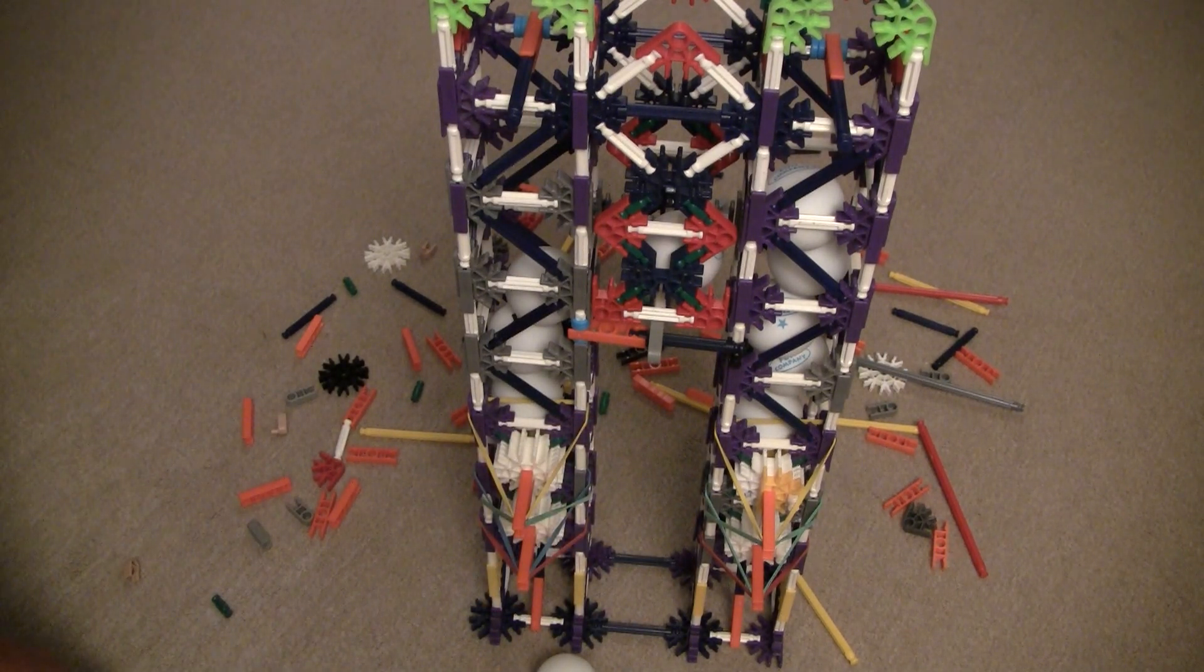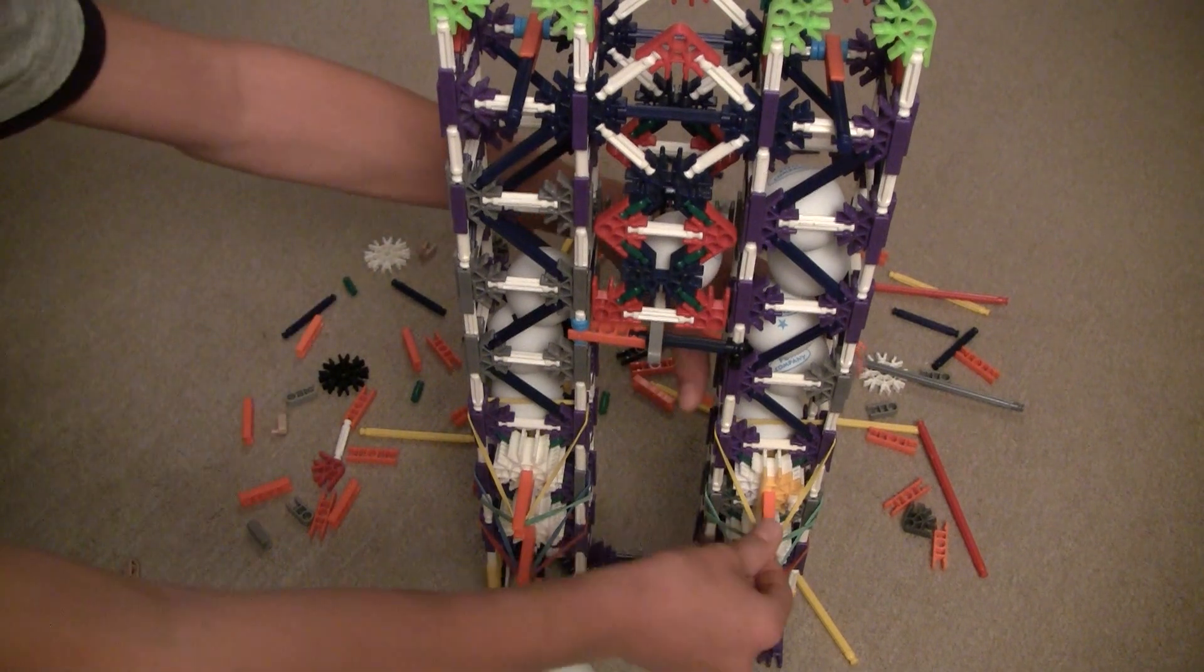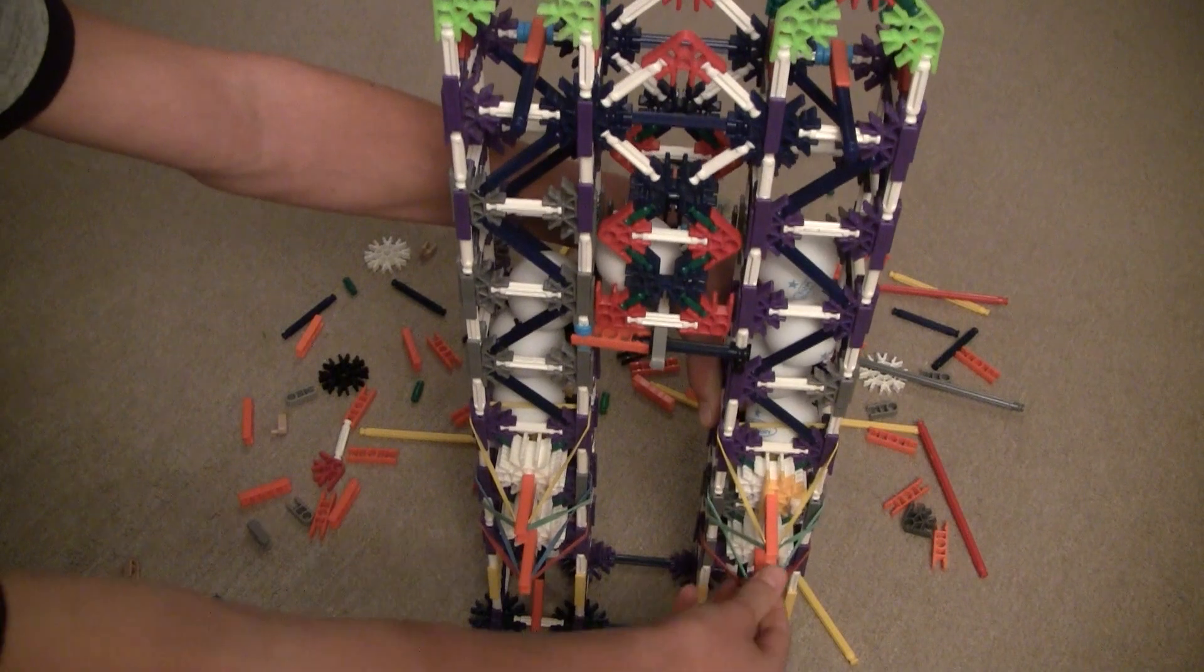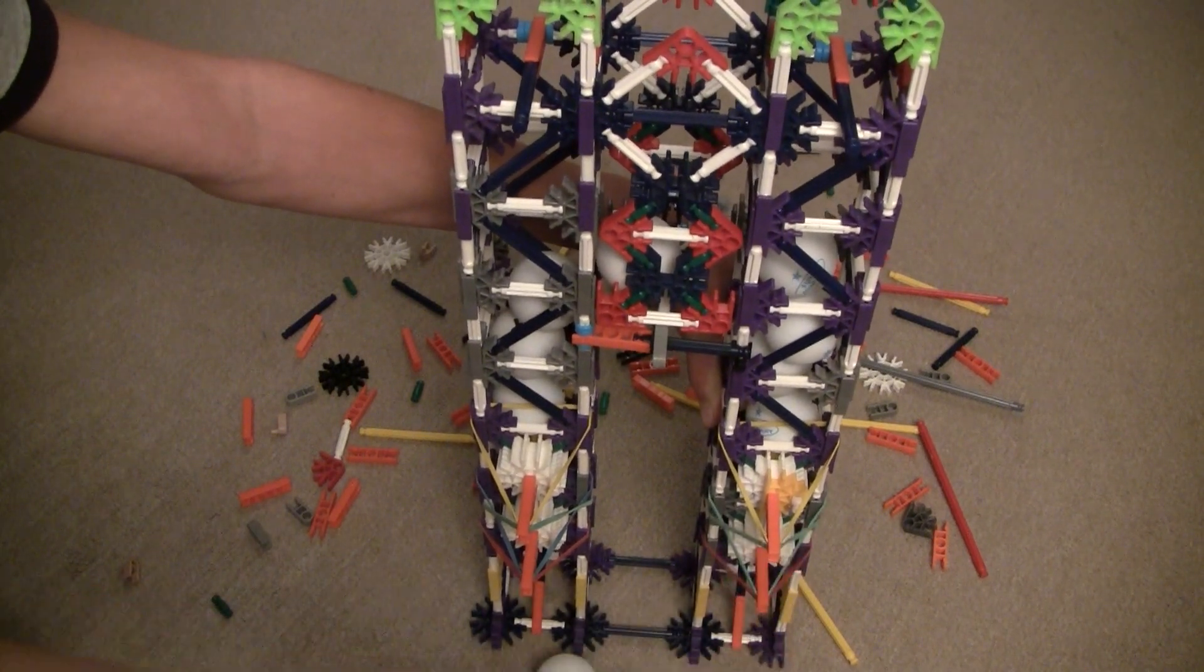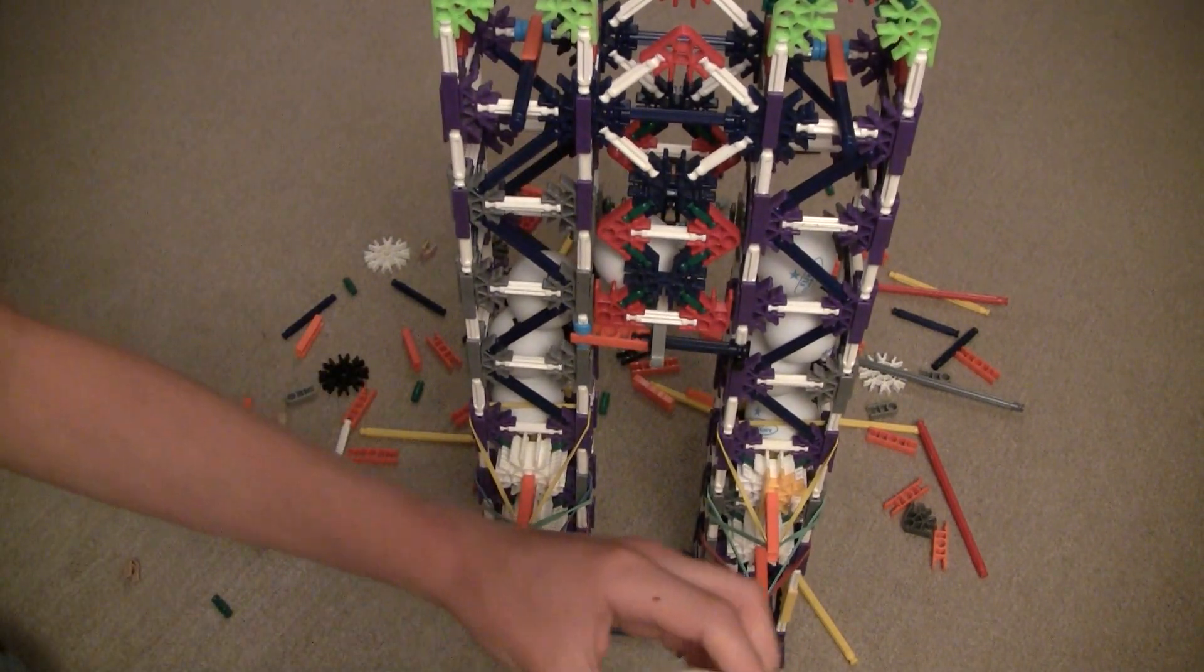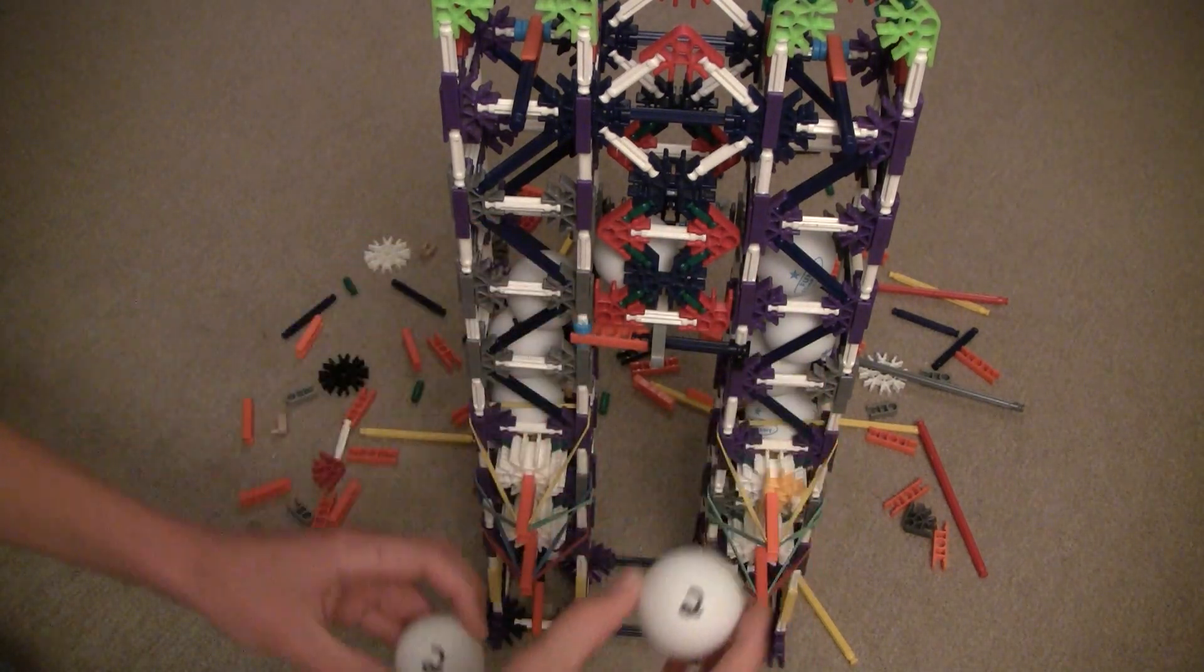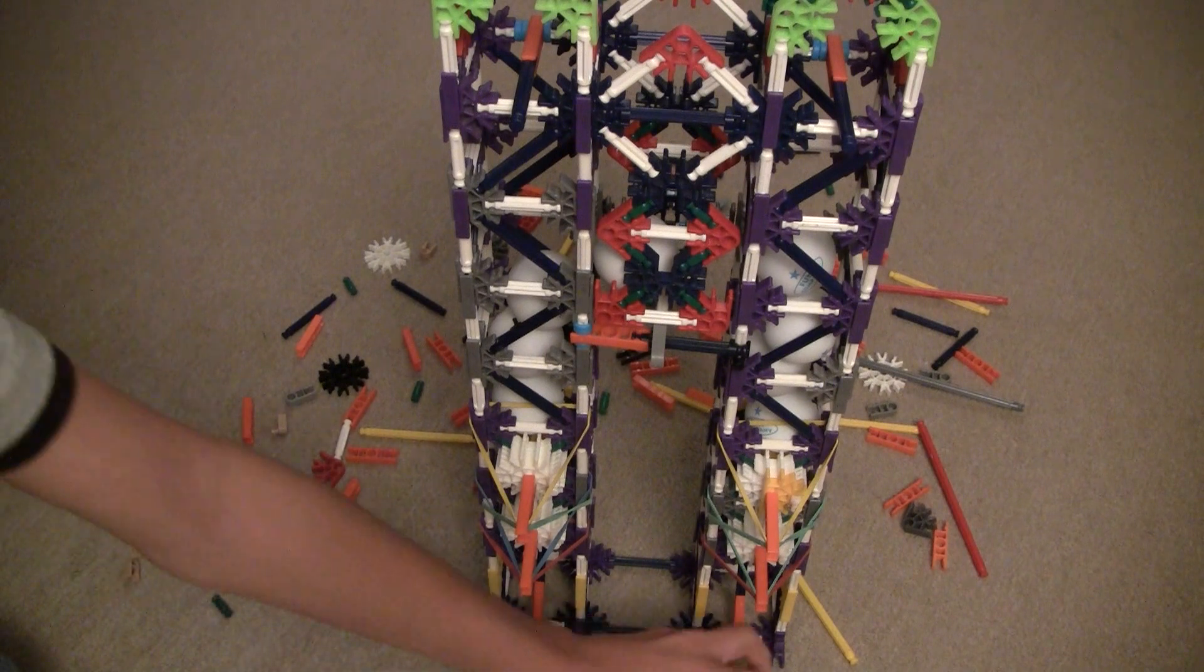Now what if we wanted to do two plus two? Let's go over to the twos column. And we have a two ball. And two plus two is four. So we have to do a little bit of adding to it like this.